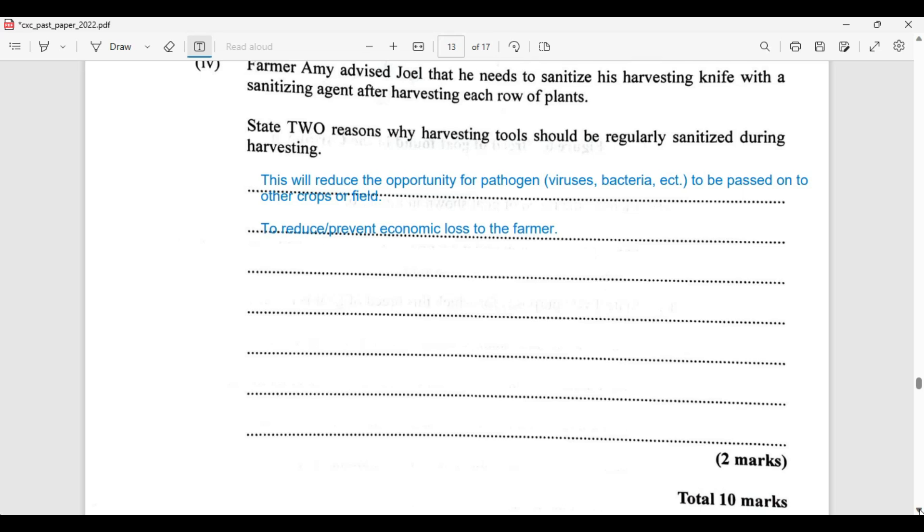To reduce or to prevent the economic loss to the farmer. If the plants become all diseased, the farmer pretty soon will have nothing to sell as the plants will die or not be able to bring him a fruitful return.